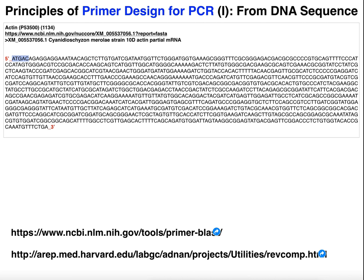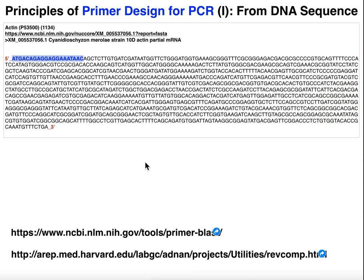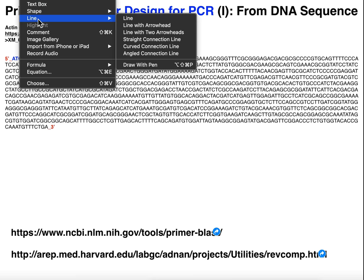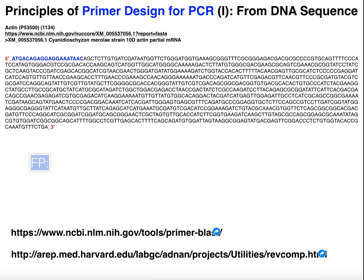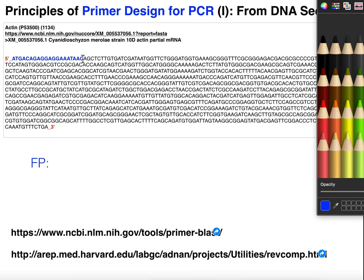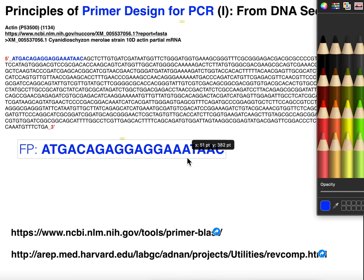So we count over 20 nucleotides from the start. This sequence right here, as is, is going to be our forward primer. When you design the forward primer in a PCR amplification, as long as the sequence you have is the coding strand, your forward primer — you don't have to do anything to it. You just count over roughly 20 nucleotides, and that's your forward primer sequence. When you order that primer, this is the sequence that you type in.